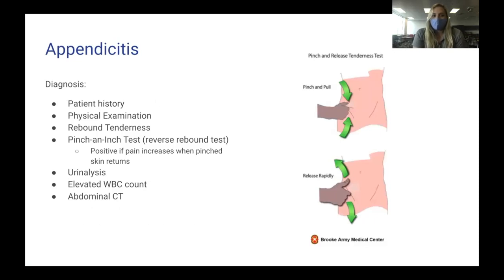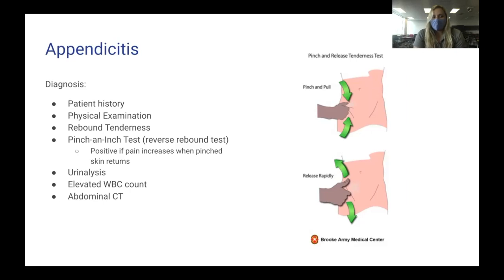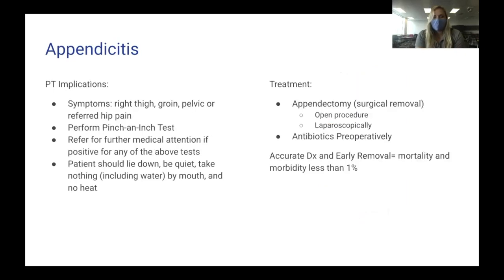Diagnosis of appendicitis is based on patient history, physical examination, rebound tenderness, and the pinch and inch test: the therapist pinches the skin over McBurney's point and releases rapidly — positive if pain increases. Also used are urinalysis, elevated white blood cell count of 20,000 or above, and an abdominal CT. PT implications: when you see symptoms over the right thigh, groin, pelvis, or referred hip pain, perform the pinch and inch test and refer for further medical attention if positive.